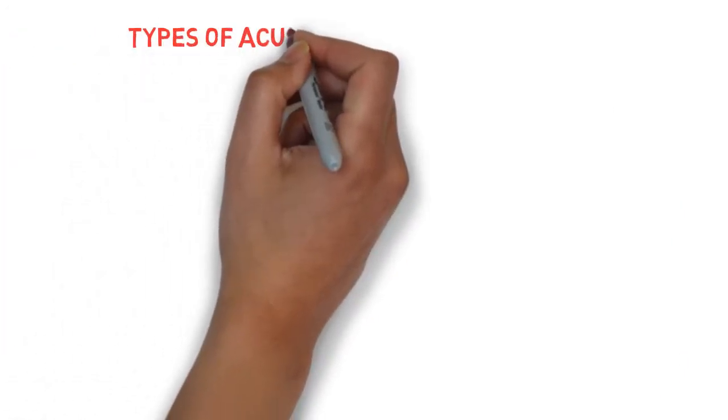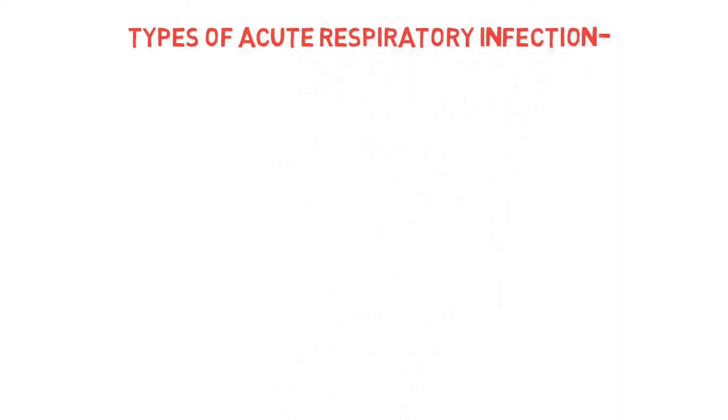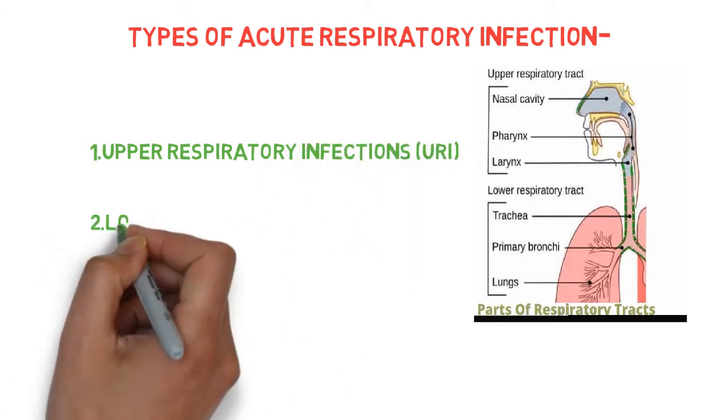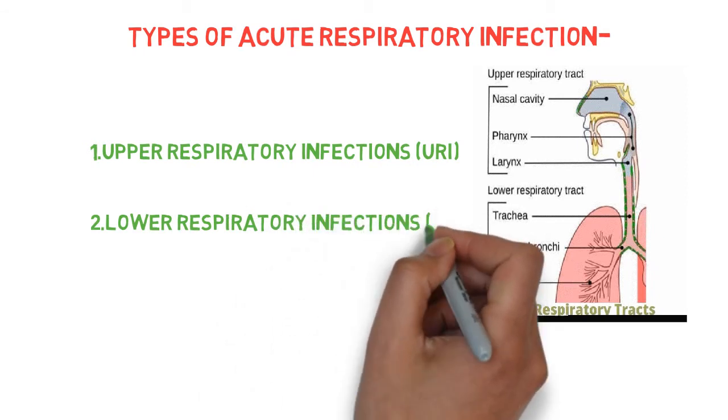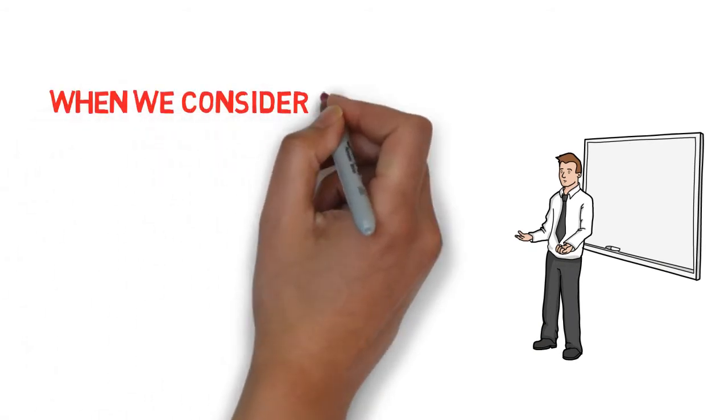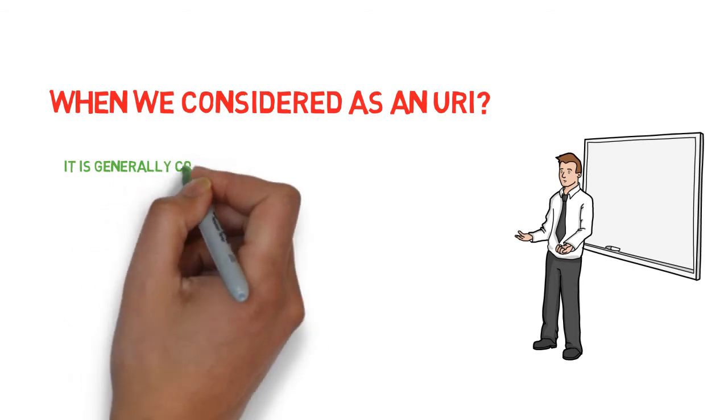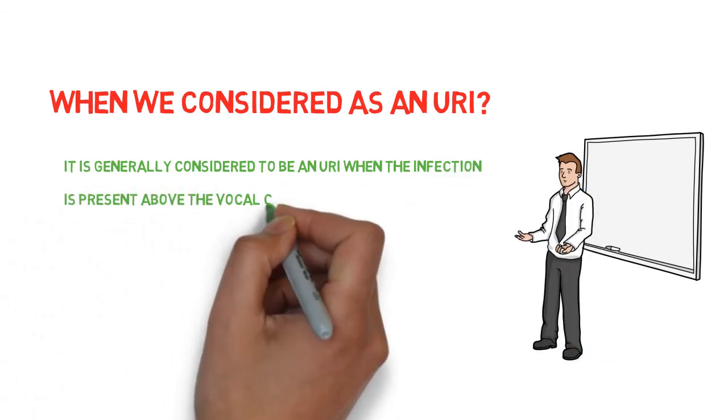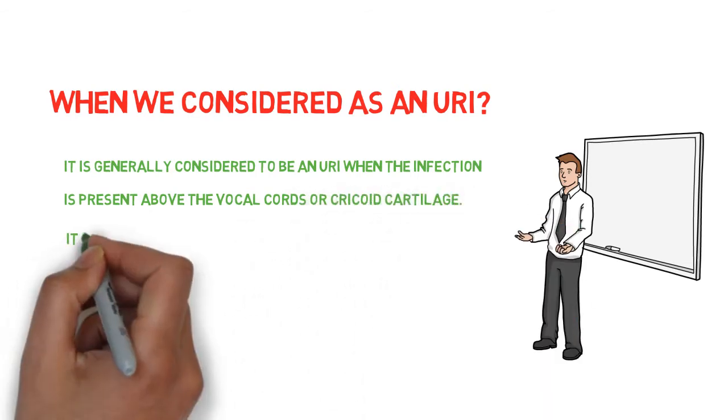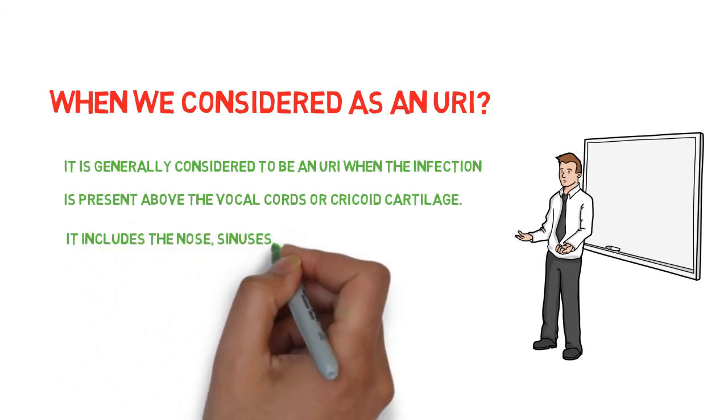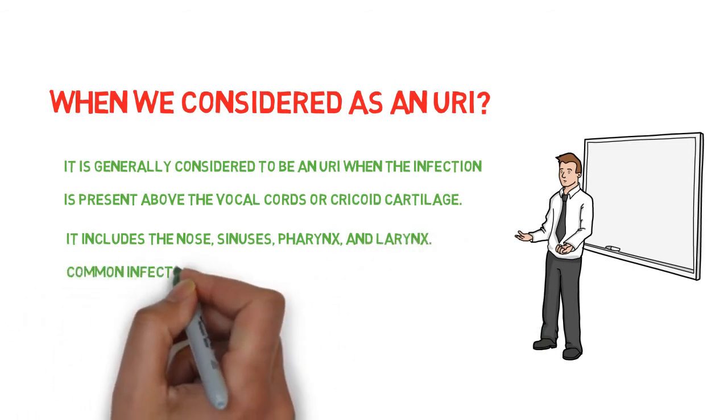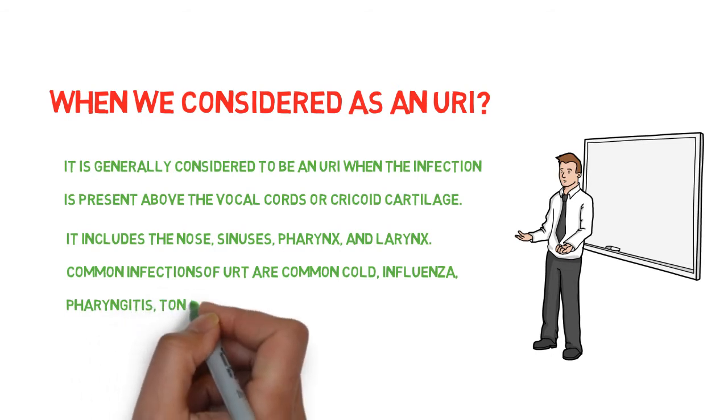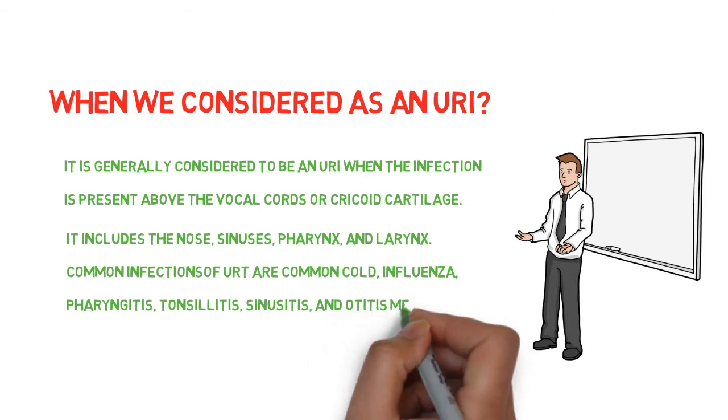Now we will know the types of acute respiratory infections. We generally classify it into two types: first, upper respiratory infection, and second, lower respiratory infection. It is generally considered to be an upper respiratory infection when the infection is present above the vocal cord or cricoid cartilage. It includes the nose, sinuses, pharynx, and larynx. Common infections of upper respiratory tract are common cold, influenza, pharyngitis, tonsillitis, sinusitis, and otitis media.